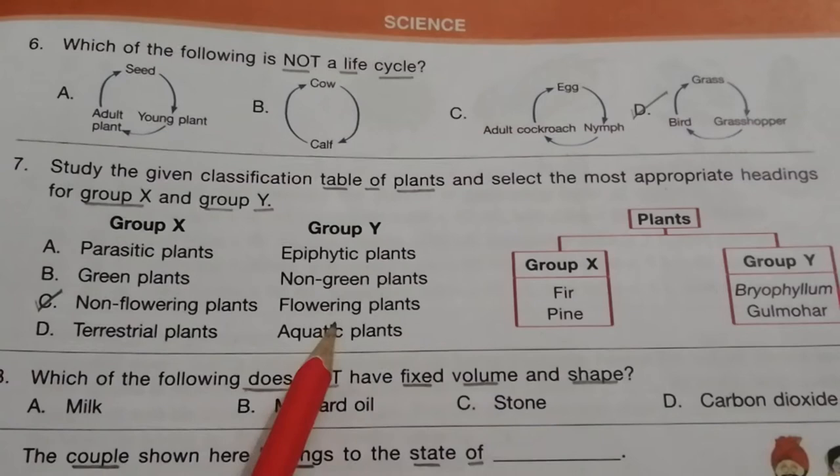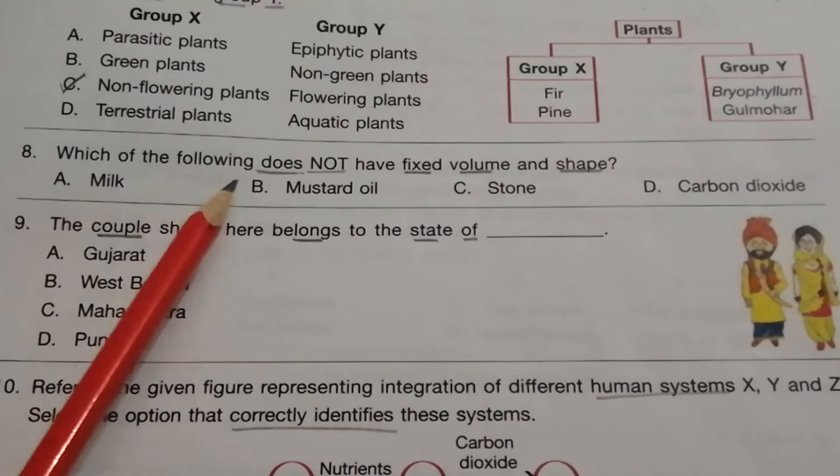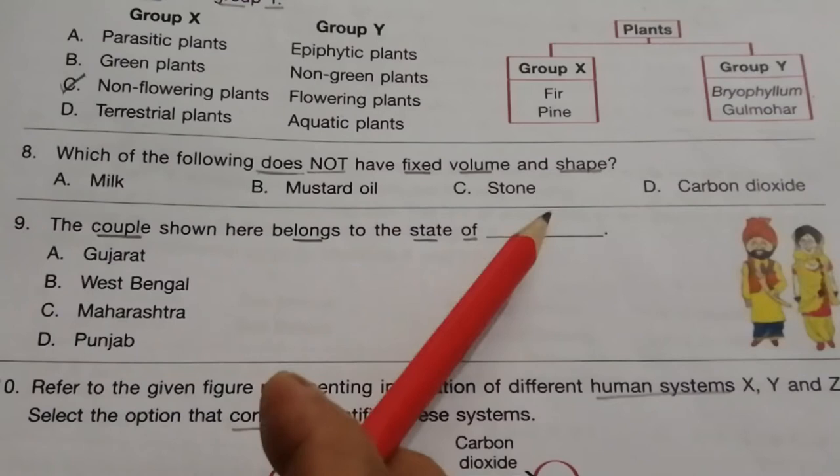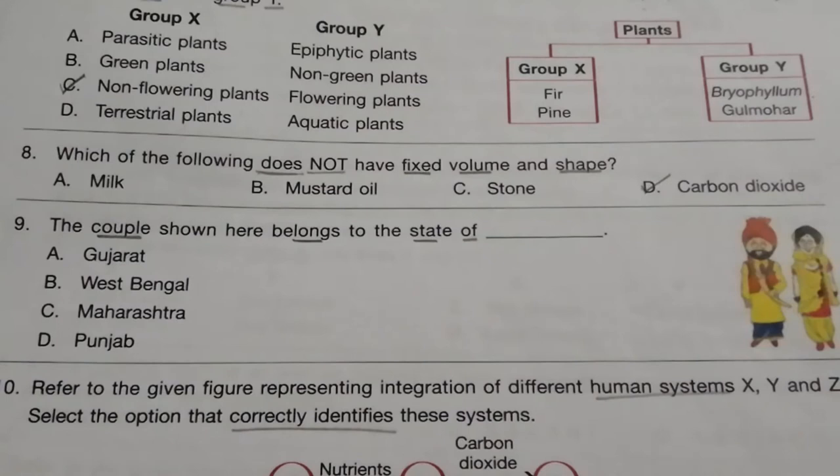Question 8: Which of the following does not have fixed volume and shape? Options are milk, mustard oil, stone, and carbon dioxide. The answer is D: carbon dioxide, as gases do not have fixed volume and shape.